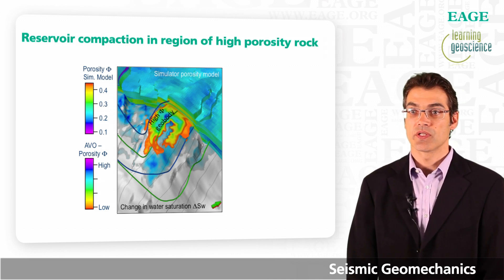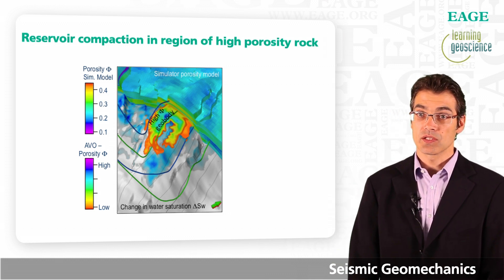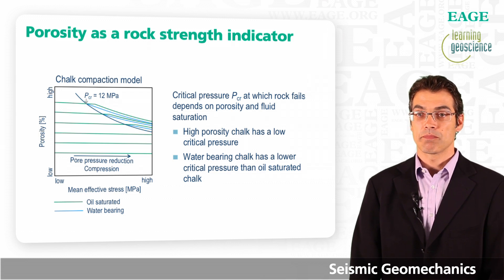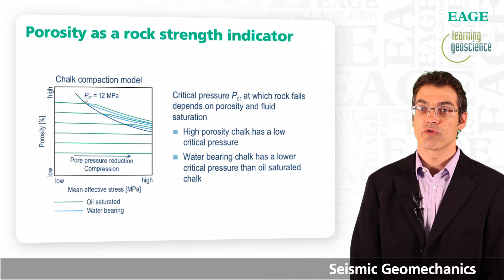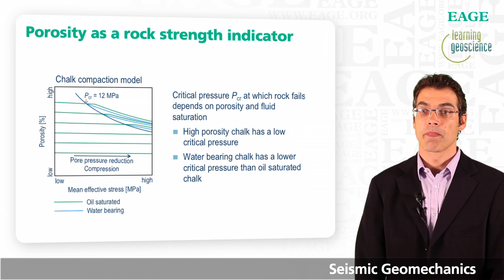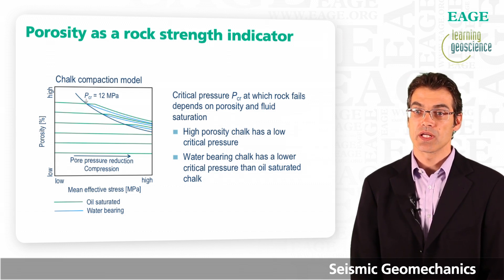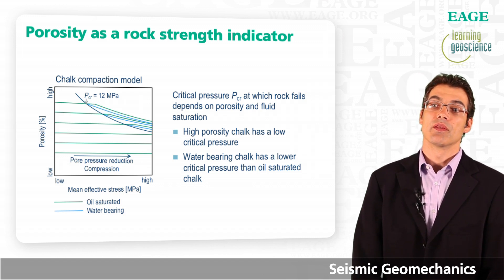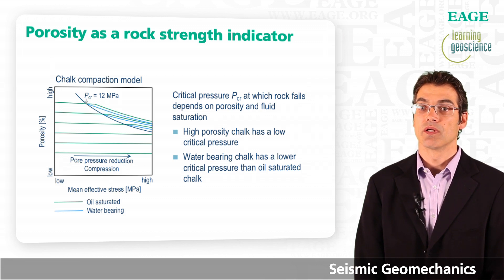Applying the rock physics model to the AVO inversion models, we can derive volumes of porosity over the entire field. The high porosity geobody extracted from the seismic AVO inversions is mainly responsible for the reservoir compaction observed in this field. In the chalk compaction model, each horizontal green line represents a rock sample at different initial porosities — 45%, 40%, 35%, 30%, 25%, and 20%. As reservoir pore pressure is reduced, the sample moves from left to right along the line. A reduction in pore pressure causes an increase in mean effective stress. Once the mean effective stress reaches a critical pressure threshold, the rock starts to fail.